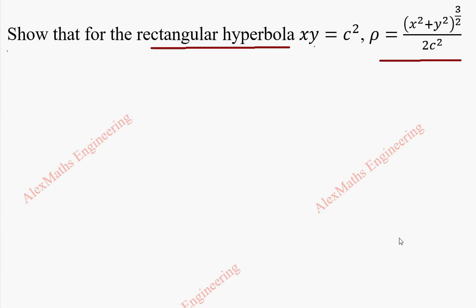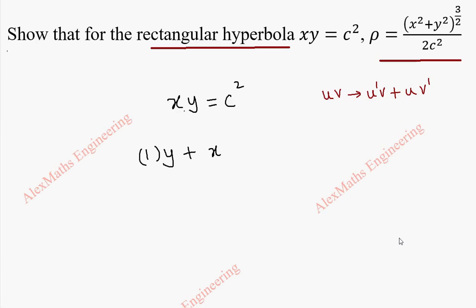From the given equation, we are going to find dy by dx. So we have xy equal to c square. We are going to differentiate this using the product rule. The product rule formula is the uv method: u dash v plus u v dash. So the differentiation of x is 1, multiplied by y, plus x multiplied by dy by dx, and on the other side c square is a constant so it is 0. So let us take y to the other side, giving x dy by dx equal to minus y.